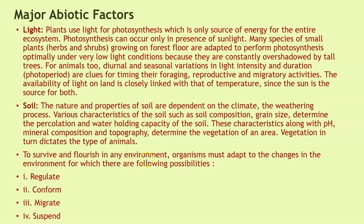To survive and flourish in any environment, organisms must adapt to environmental changes through the following possibilities. First is regulate: some organisms are able to maintain homeostasis by physiological and behavioral changes, which ensures constant body temperature and constant osmotic concentrations. All birds and mammals are capable of such regulation — called thermoregulation and osmoregulation. The next adaptation is conform: most animals and plants cannot maintain a constant internal environment. Their body temperature changes with ambient temperature, and in aquatic animals, osmotic concentration of body fluids changes with ambient water. These organisms are called conformers.